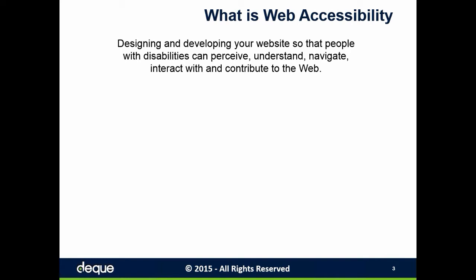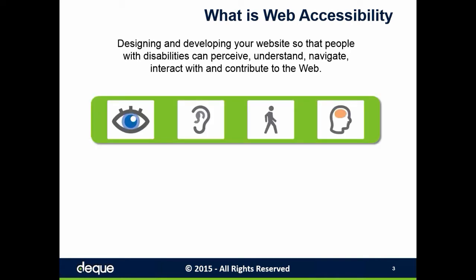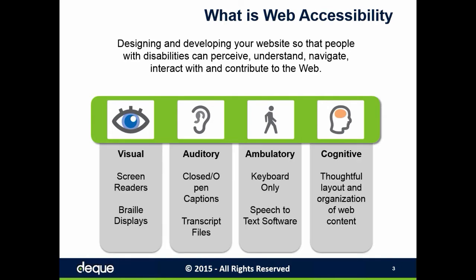When I say disabilities, we are talking about four main categories, all of which use varying forms of assistive technology to help a user achieve an equal experience on the web. In our first category, the visual category, this could be blind or low vision users potentially using screen readers, screen magnification, or possibly even a braille display. In our auditory category, it's the deaf or hard of hearing who may require closed or open captions or transcripts for all of the rich multimedia content on the web today.